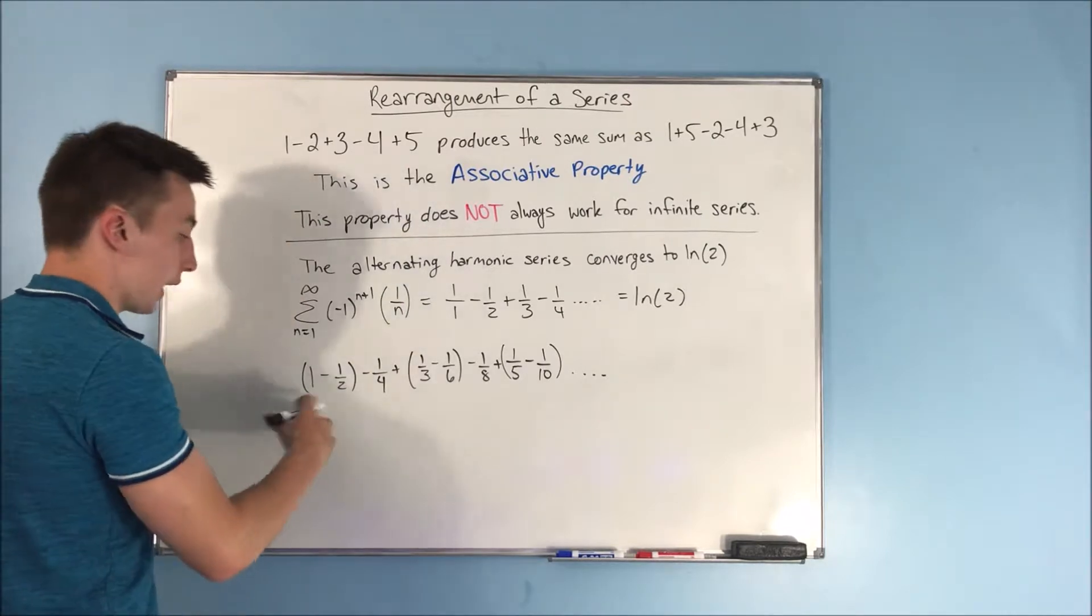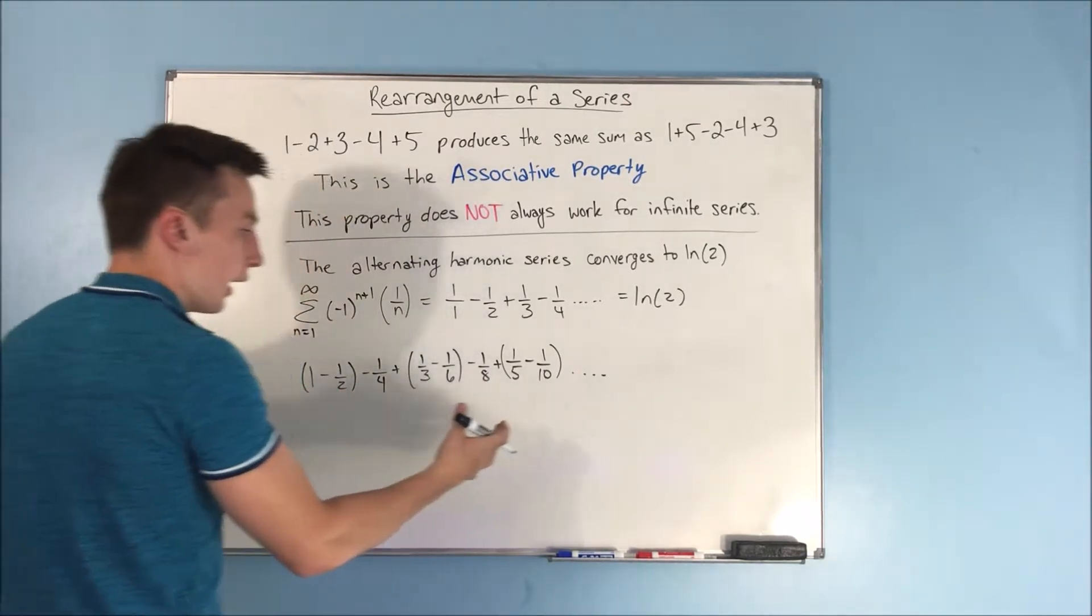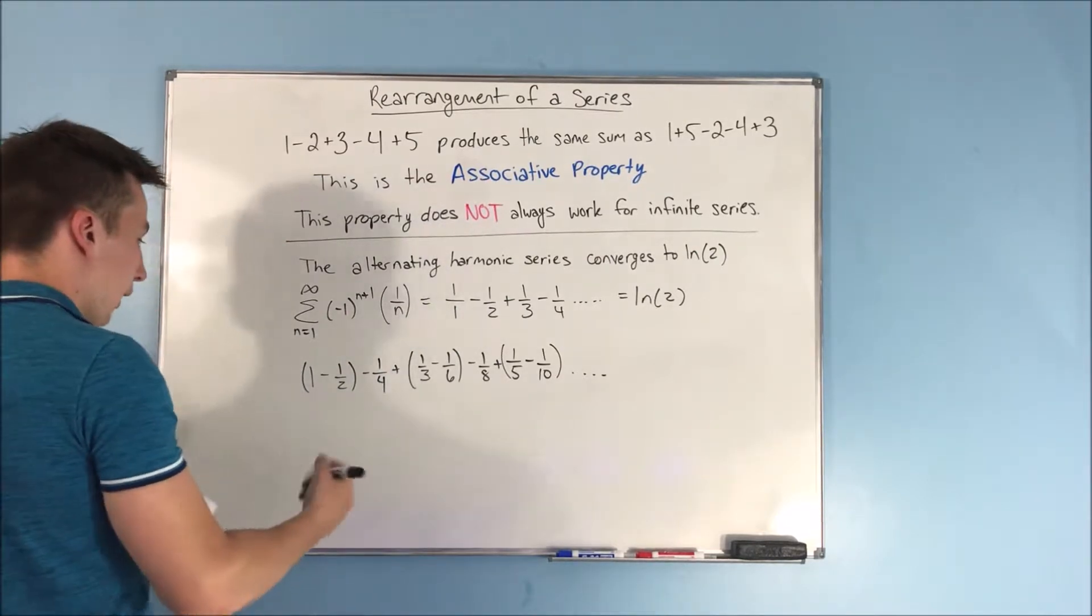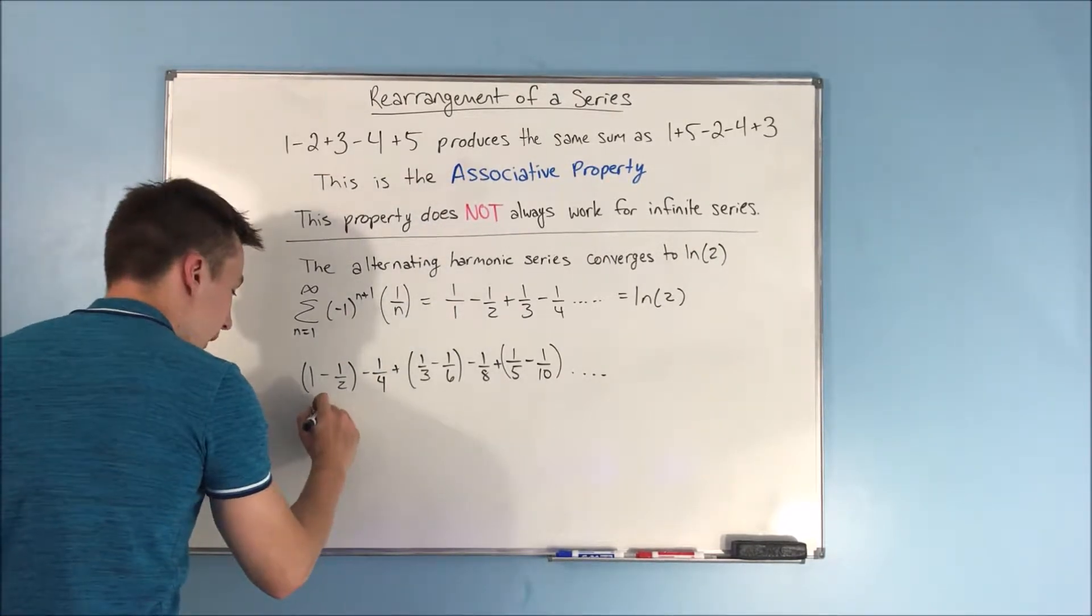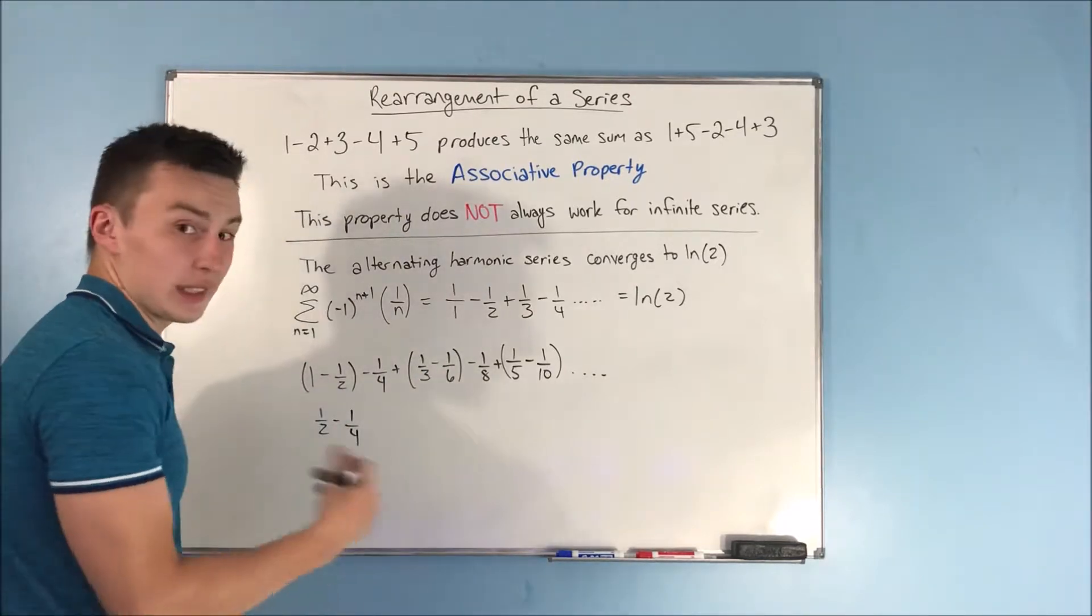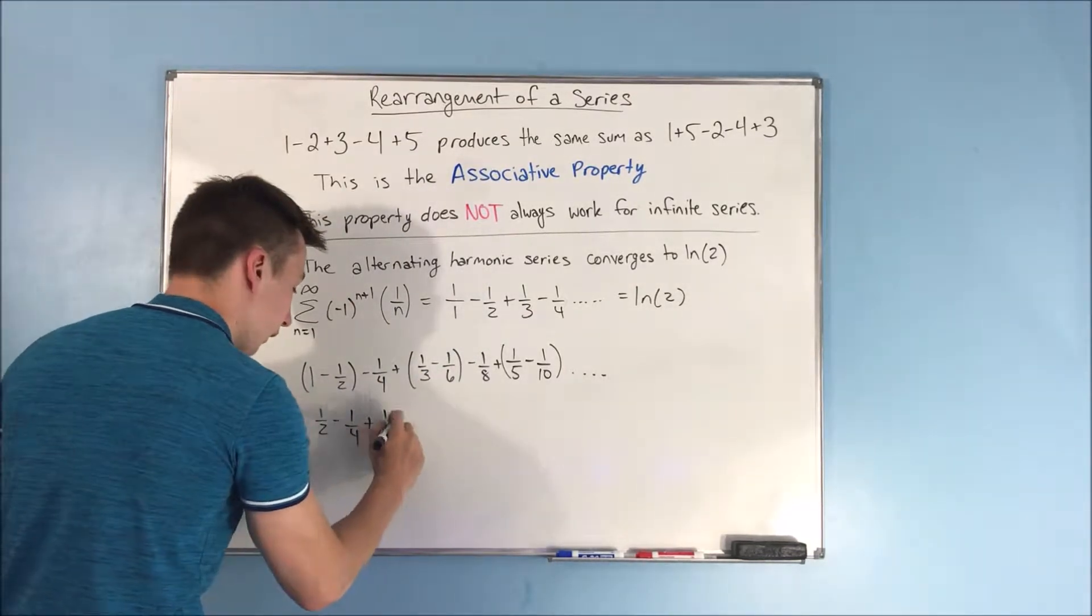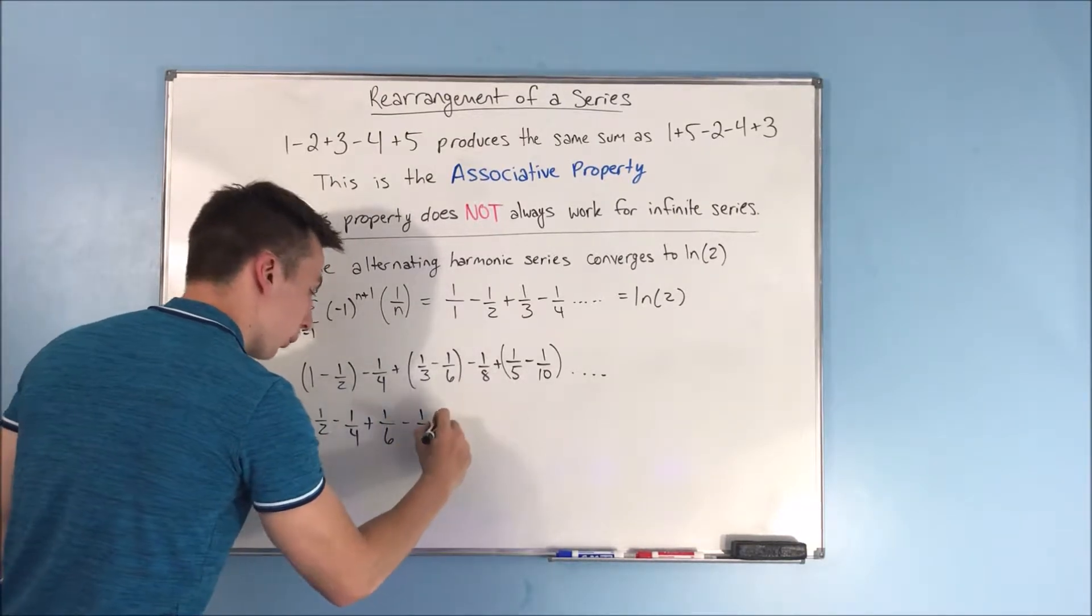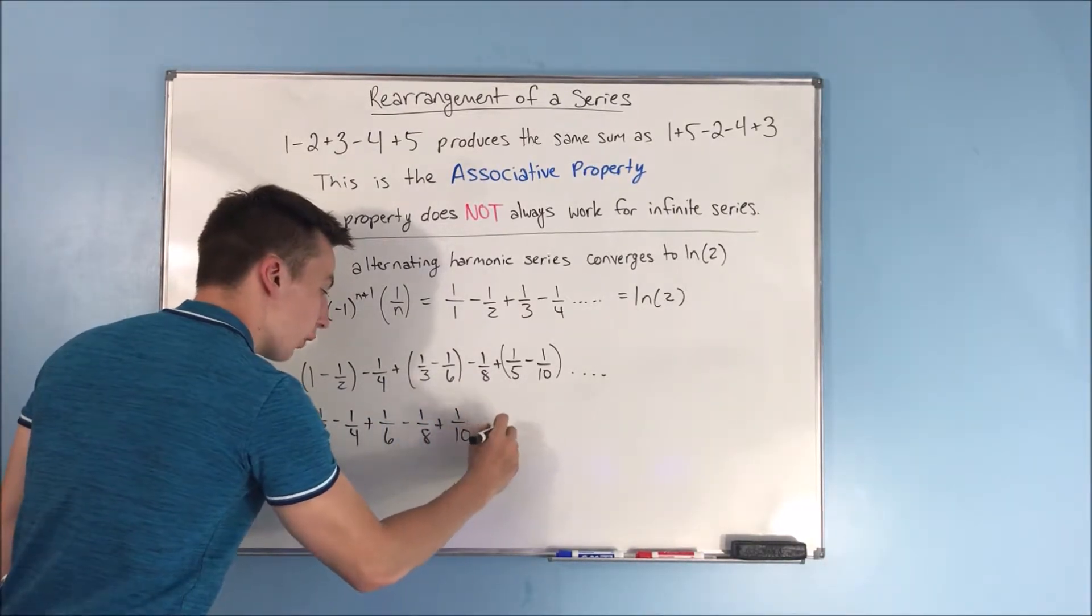So all I really did here was just kind of mix up the terms a little bit. And you can see that if this goes on and on, what you're going to end up with is, well, this is going to be a 1 half minus 1 fourth. 1 third minus 1 sixth. Well, that's 1 sixth minus 1 eighth. This will be plus 1 tenth. And this will go on and on and on.